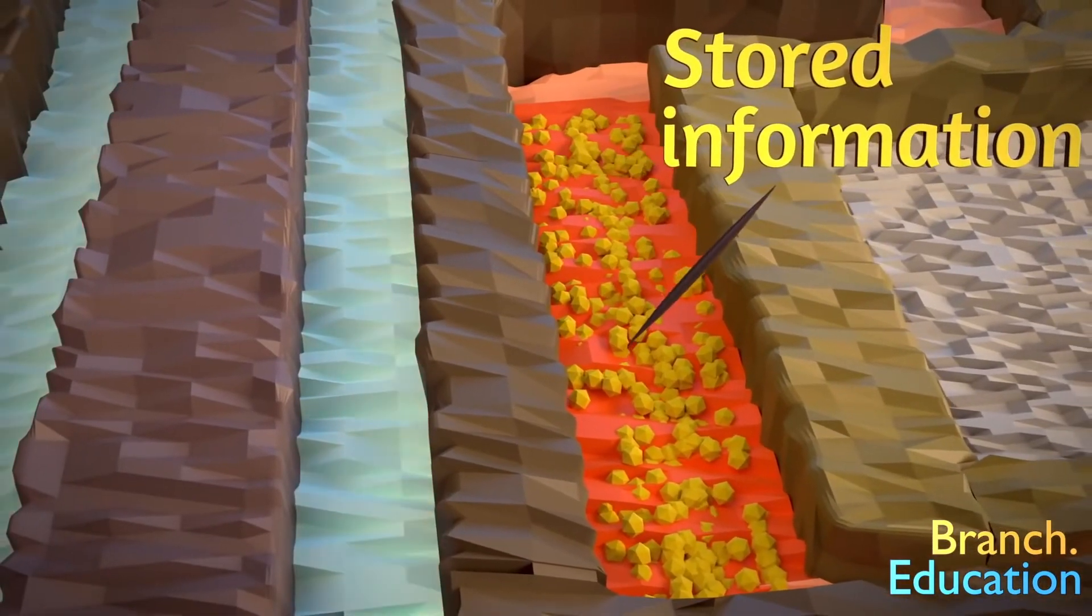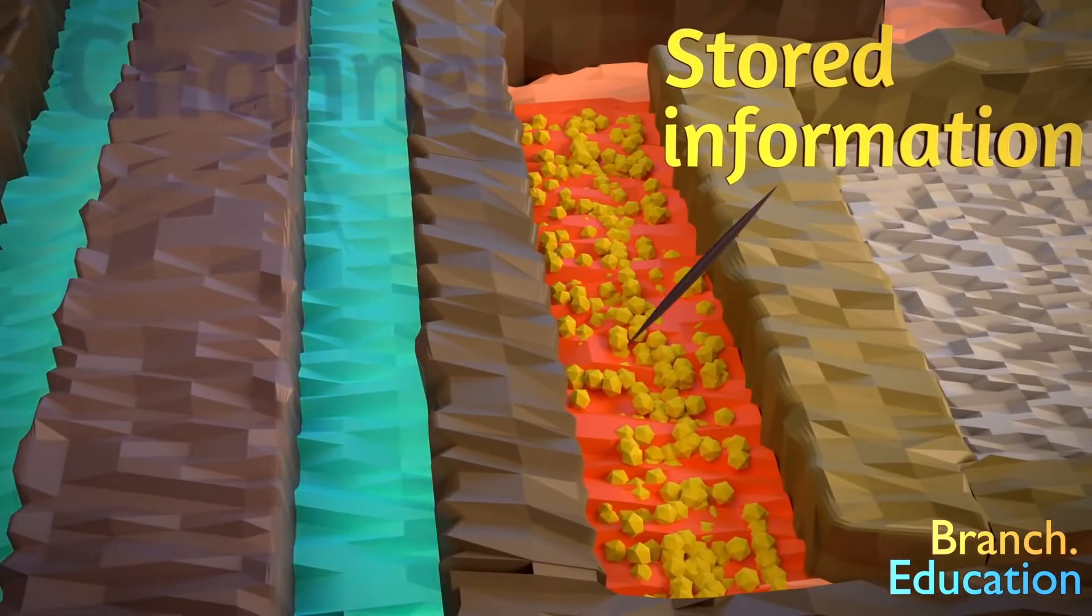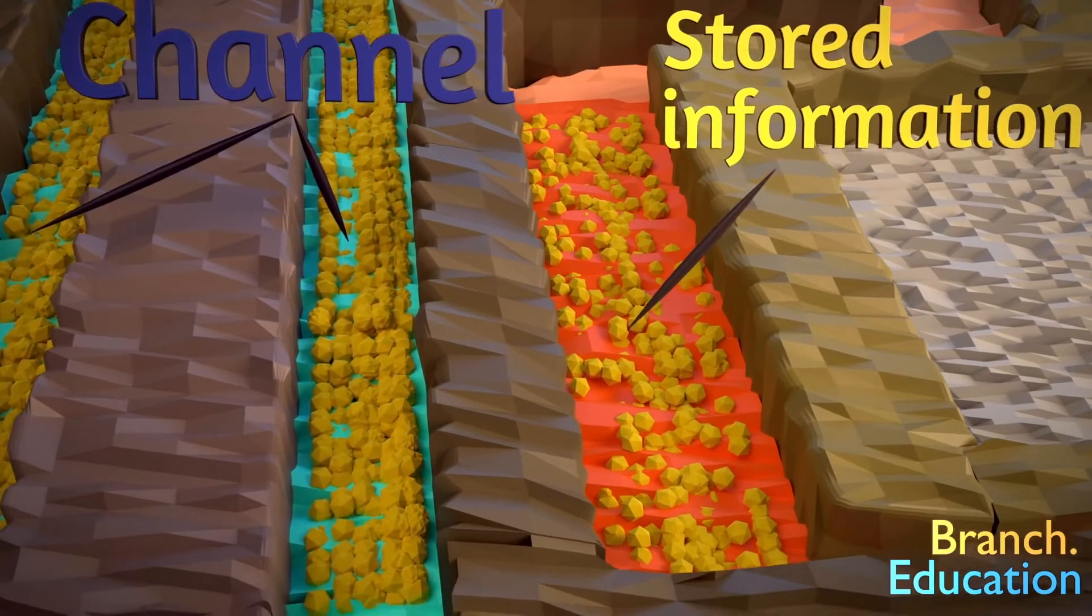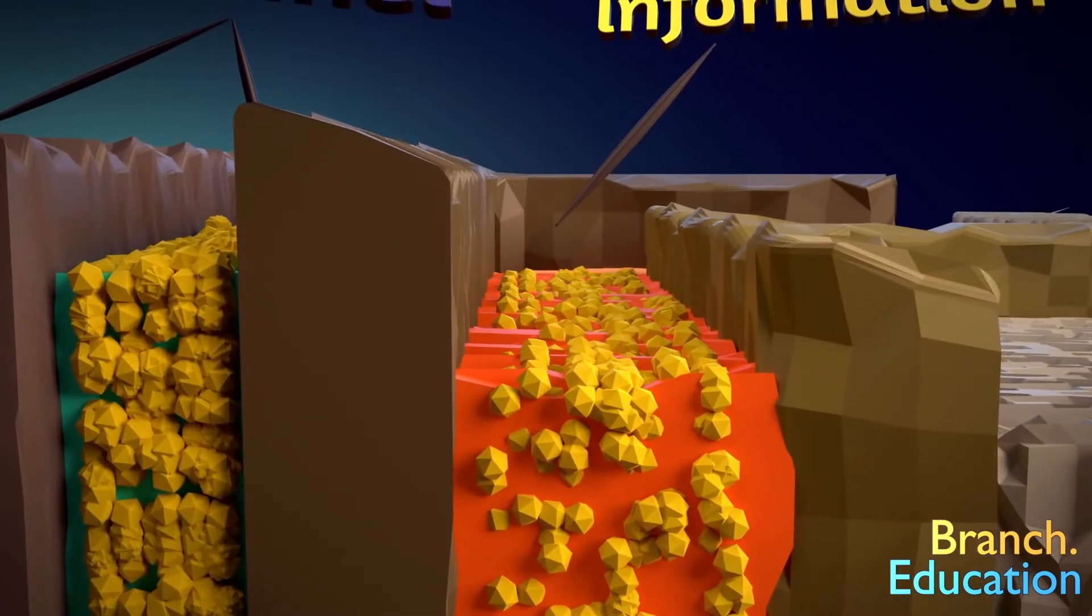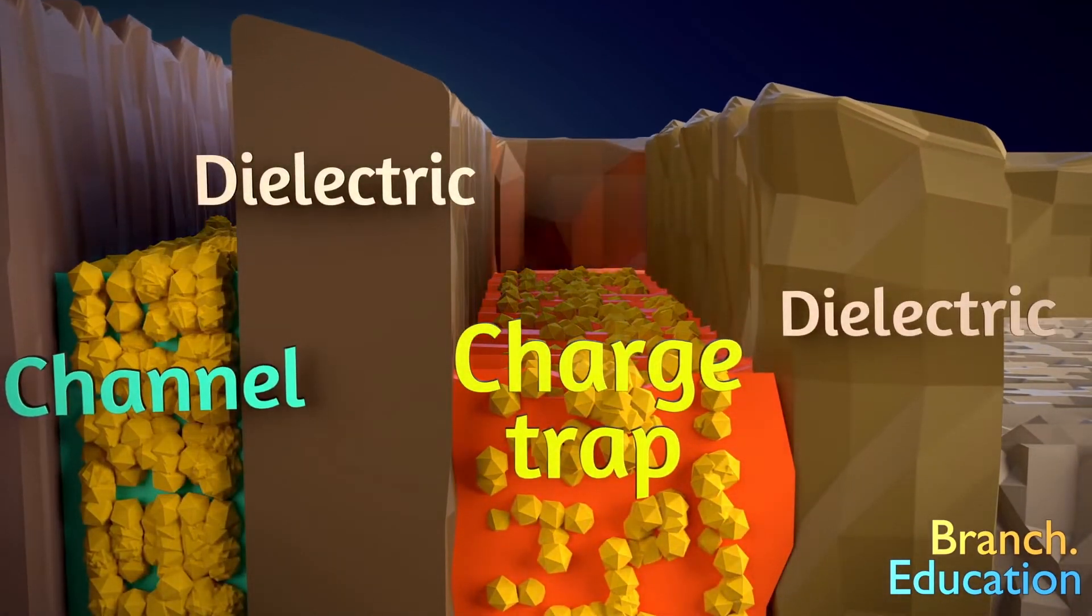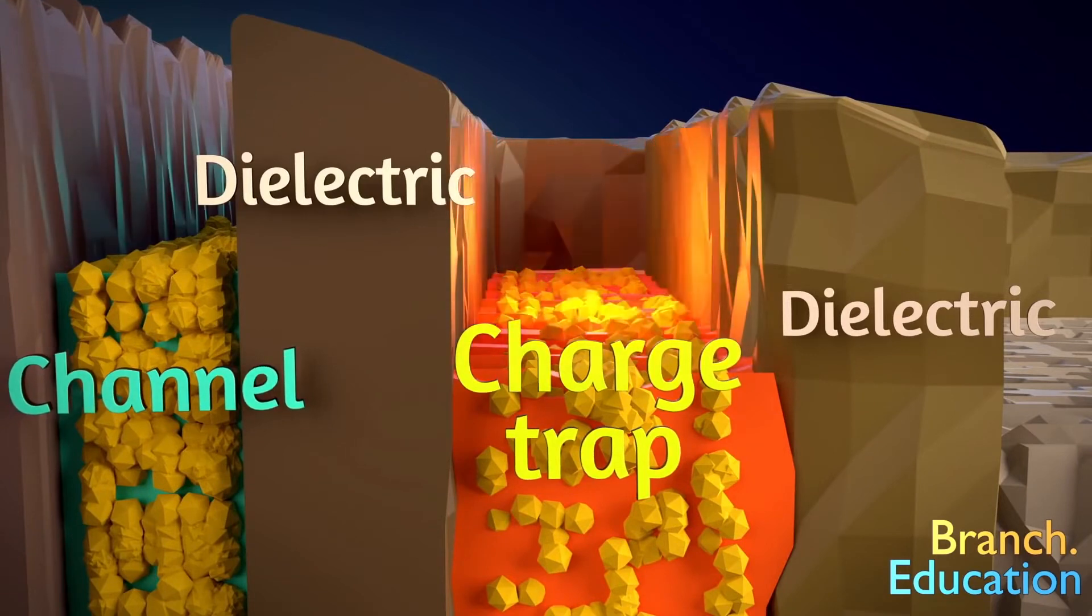The electrons started in the channel, which is blue. The blue channel is in its own valley, surrounded by dielectric walls, and thus there are two valleys, blue and orange, and the electrons can stay in one or the other, but not move back and forth.